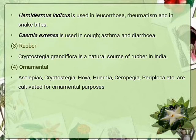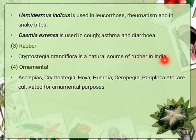Third, rubber: Cryptostegia grandiflora is a natural source of rubber in India. Fourth, ornamental: Asclepias, Cryptostegia, Hoya, Eurnia, Ceropegia, Periploca etc. are cultivated for ornamental purposes.